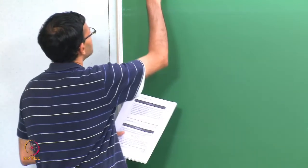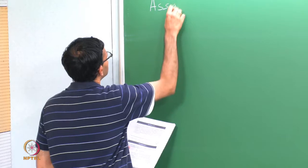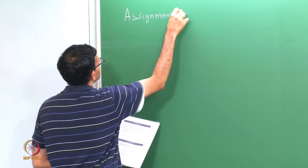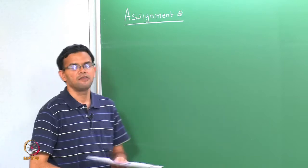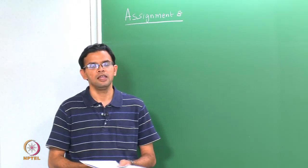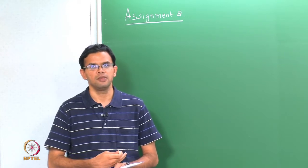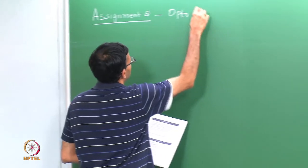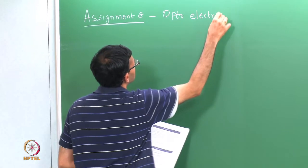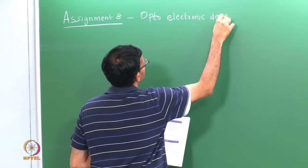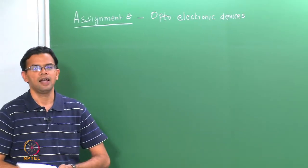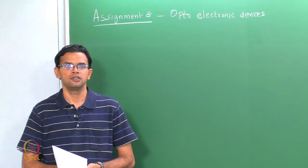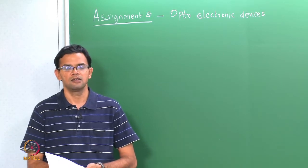In today's assignment we are going to look at optoelectronic devices. This is assignment 8. In assignment 7 we looked at problems dealing with general interaction of light with semiconductors. Today we are going to look specifically at some problems leading to devices. In the classes we looked at photodetectors, solar cells, LEDs and lasers.